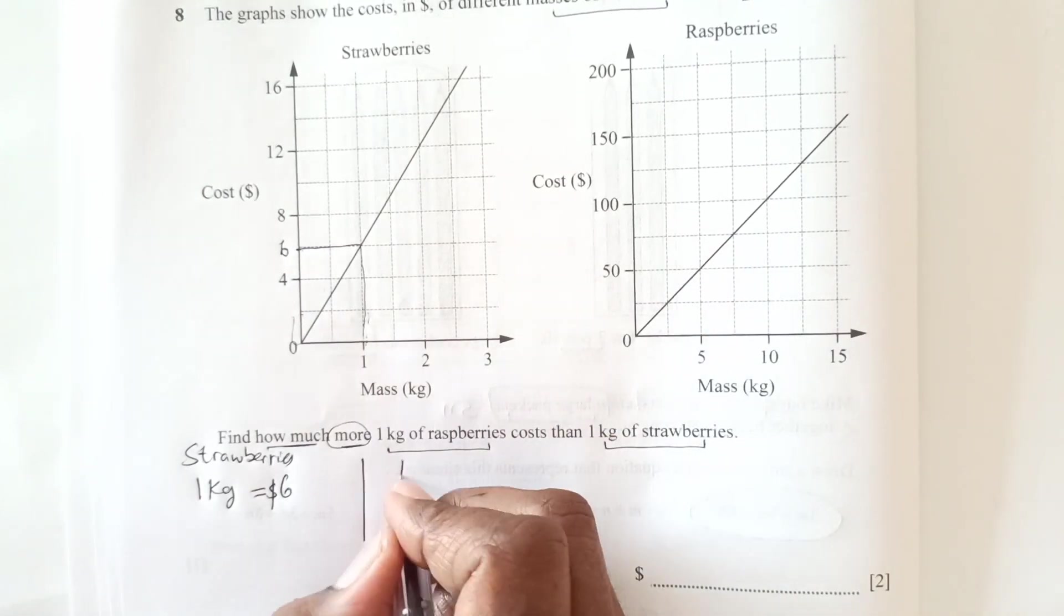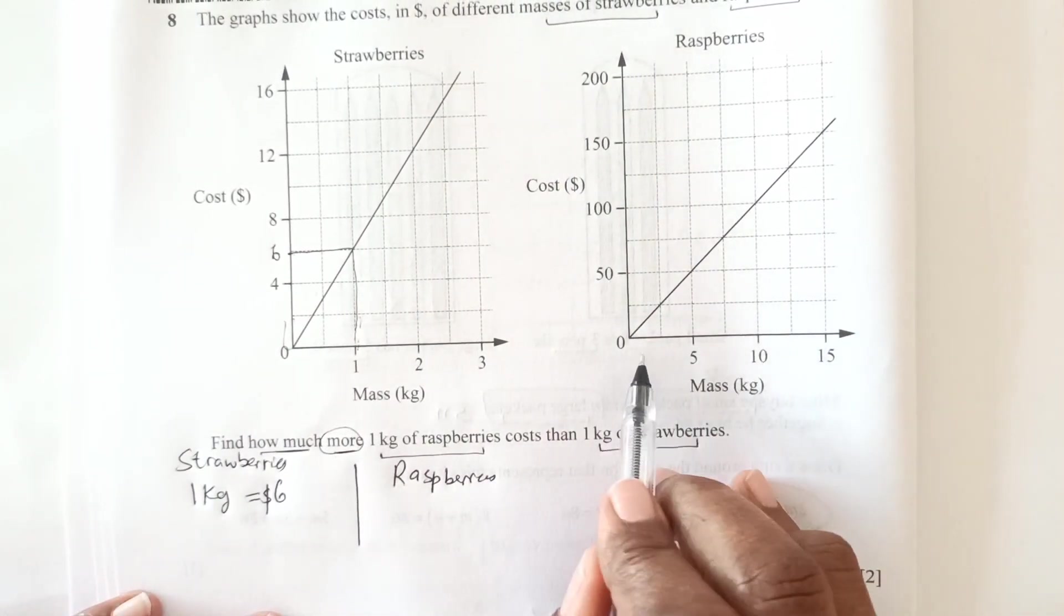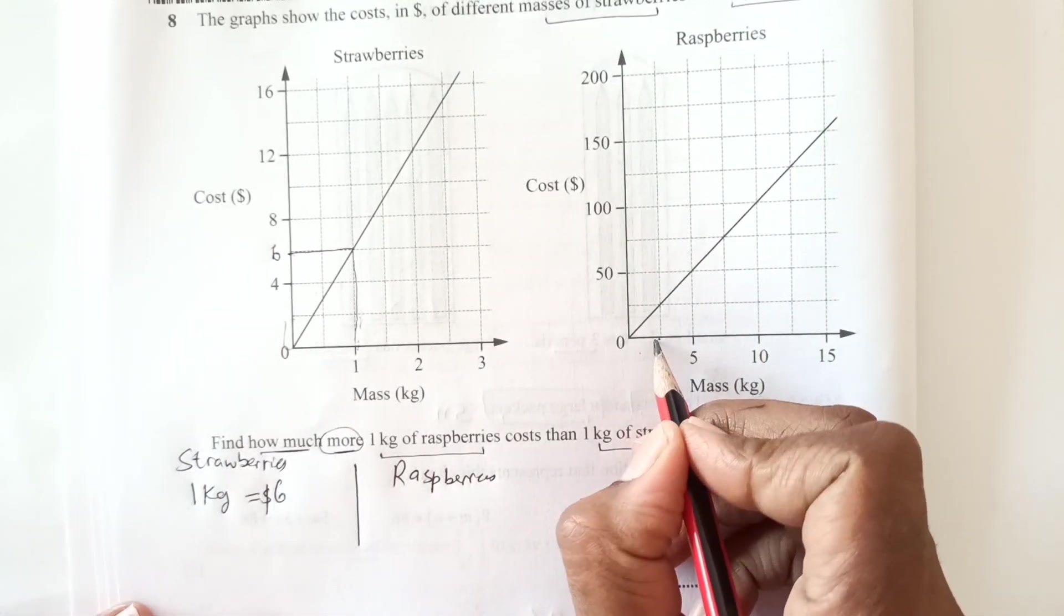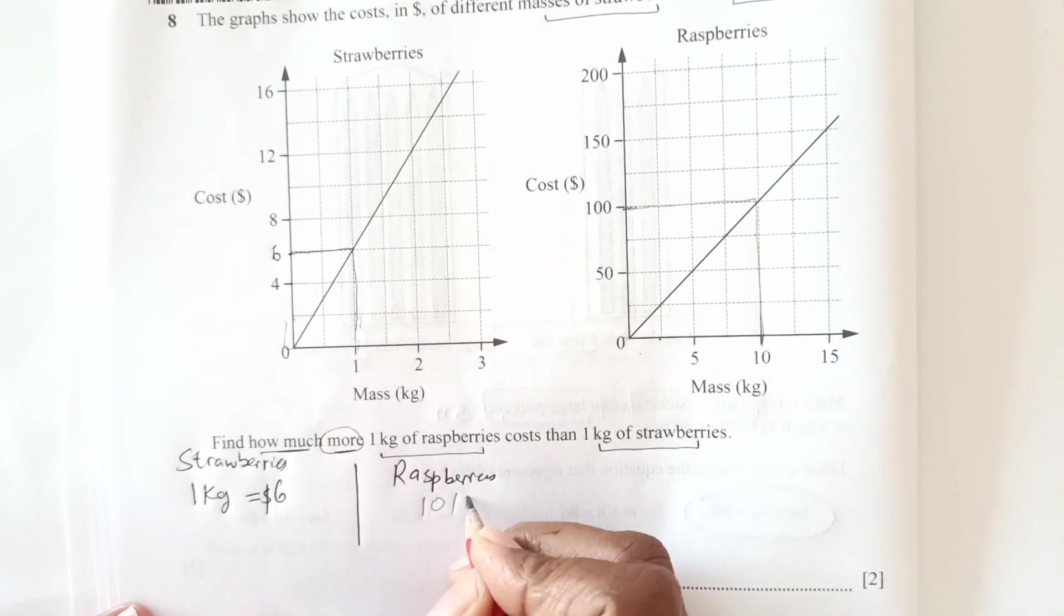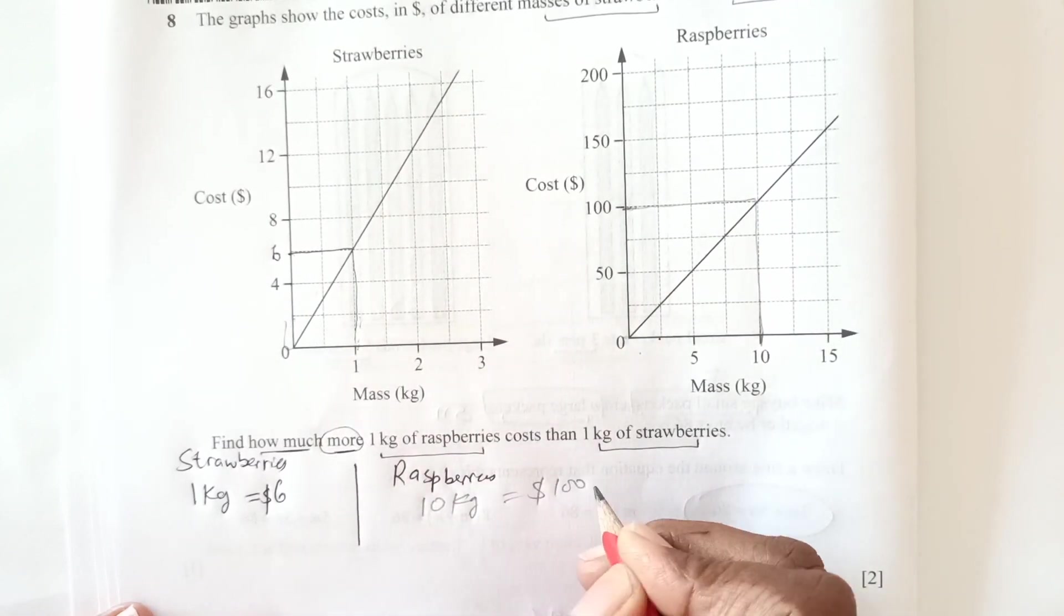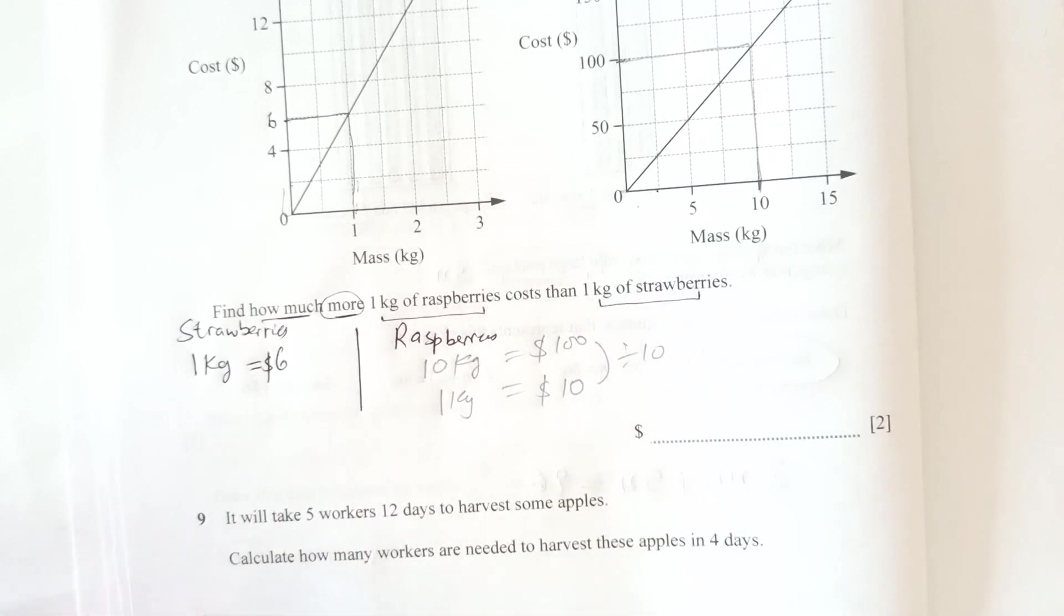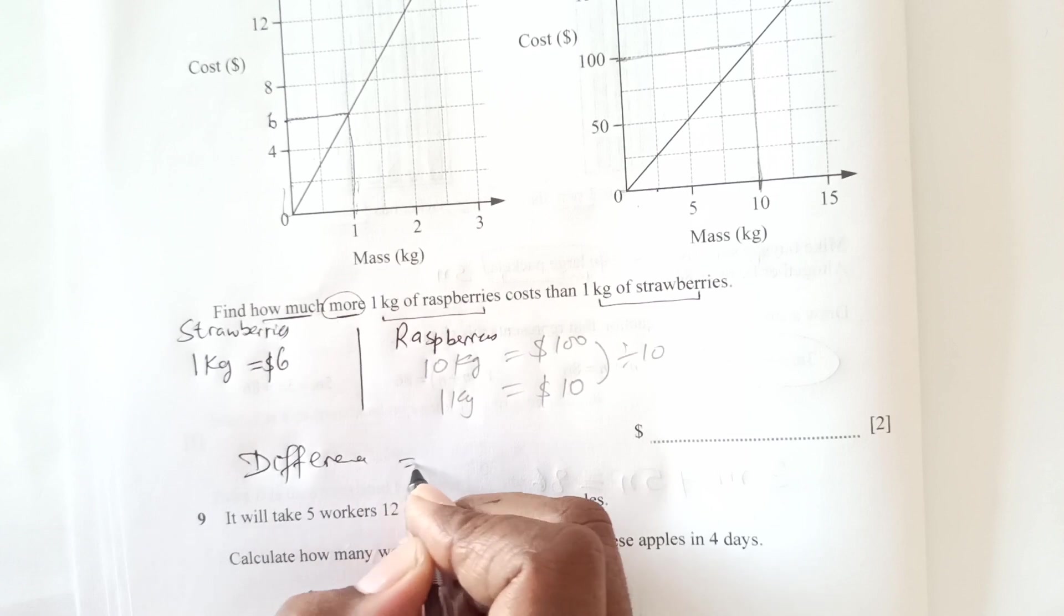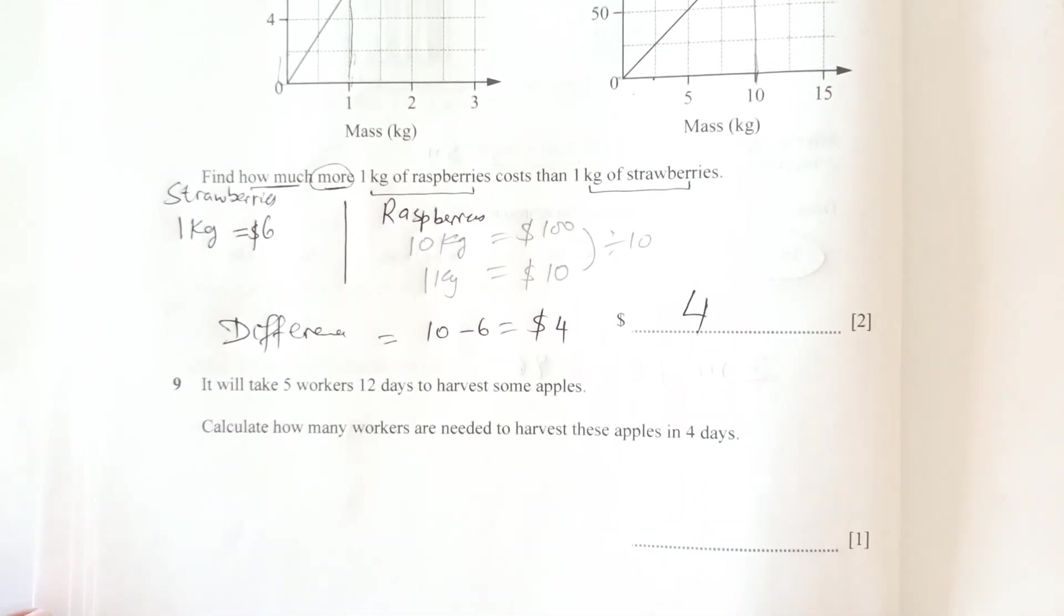And here is about raspberries. 1 kg, here we have given different here 2.5, so we cannot actually get it from here. If I go along this is 10. 10 kg. 10 kg of raspberries have 100. So I will write 10 kg of raspberries 100 dollars and 1 kg of raspberries is 10. And 1 kg of strawberry is 6. So what is the difference? So the difference is 10 minus 6, that is dollar 4. So dollar 4 is going to be the final answer.